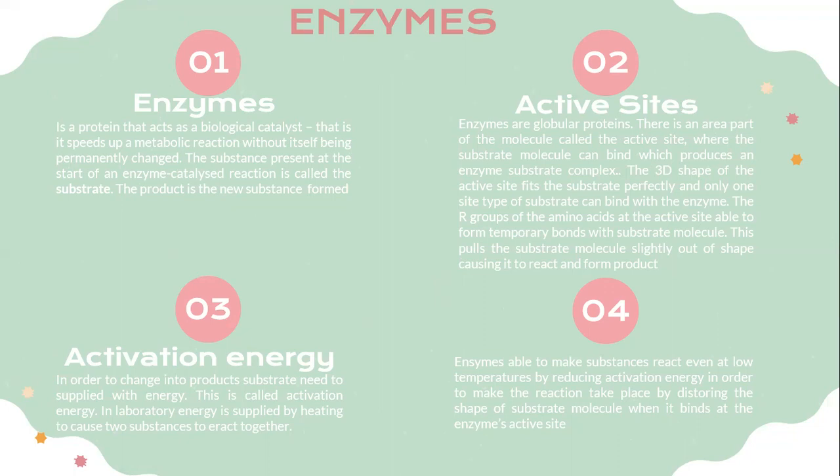In terms of activation energy, in order to change into products, the substrate needs to be supplied with energy — this is called activation energy. In a laboratory, energy is supplied by heating to cause two substances to react together. Enzymes are able to make substances react even at low temperatures by reducing the activation energy, by distorting the shape of the substrate molecule when it binds at the enzyme active site.